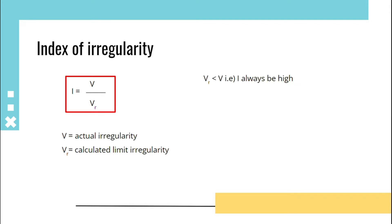In ideal case, V = V_r, that equals 1 for best evenness. But in normal case, the index of irregularity is always greater than 1.